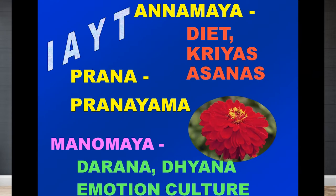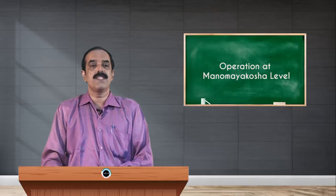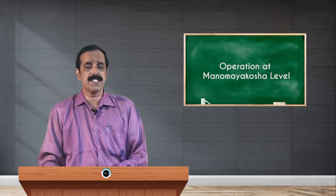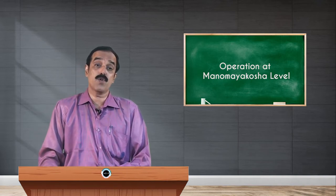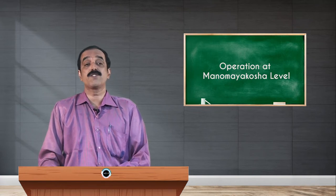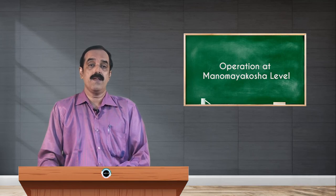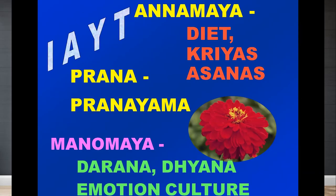When we come to the fourth important component at the annamaya kosha level — that is asanas — Patanjali clearly explains: sthiram sukham asanam. The asana should produce stability and a sense of well-being. There are two important types of asanas in therapy as well: dynamic yogasanas and relaxative yogasanas. Relaxative means practicing yogasanas in a relaxed way, and dynamic means with repetition and speed.